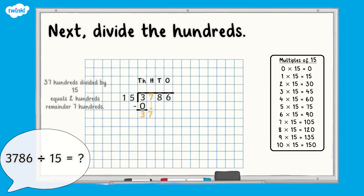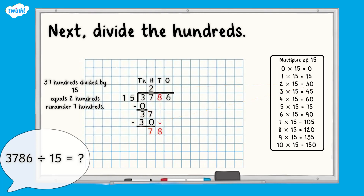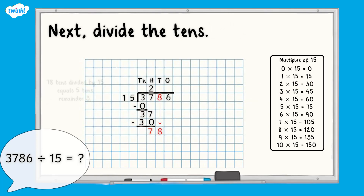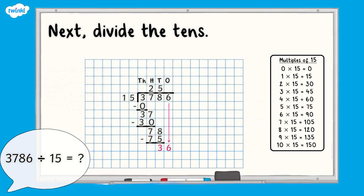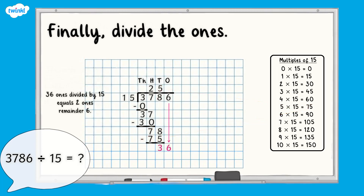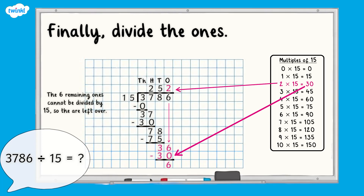Next, divide the hundreds. 37 hundreds divided by 15 equals two hundreds, with a remainder of seven hundreds. So we write a two in the hundreds column of our answer. The remaining seven hundreds are exchanged for 70 tens and added to the eight tens from 3,786, giving us 78 tens altogether. Next, divide the tens. 78 tens divided by 15 equals five tens with a remainder of three tens. So we write five in the tens column of our answer. The remaining three tens are exchanged for 30 ones and added to the six ones from 3,786, giving us 36 ones altogether. 36 ones divided by 15 equals two ones with six ones remaining, so we write a two in the ones column. The six remaining ones are left over and become our remainder.